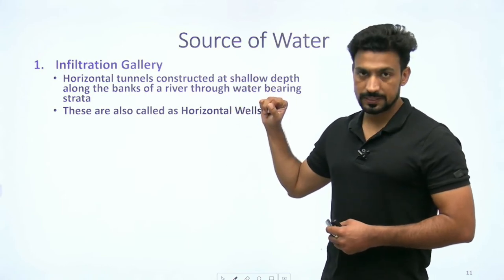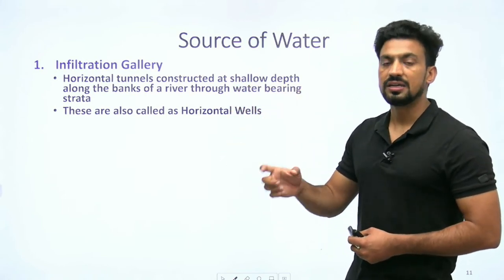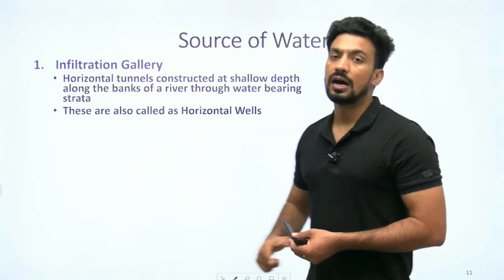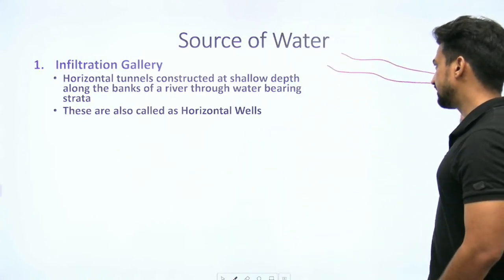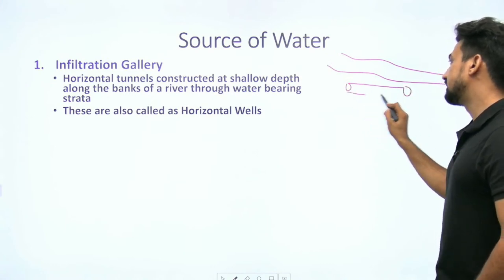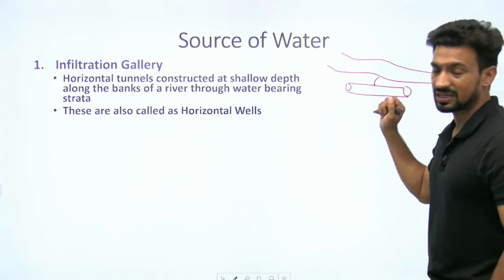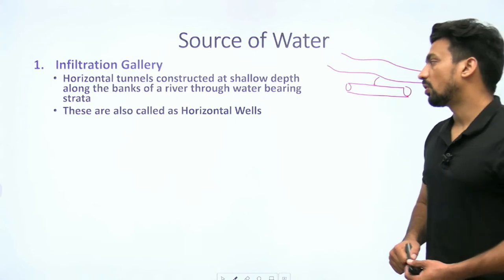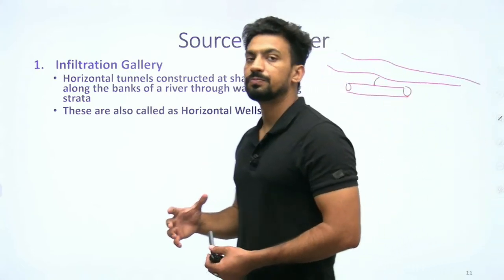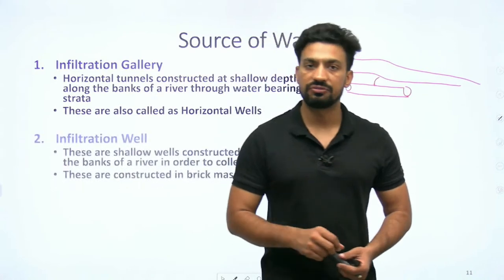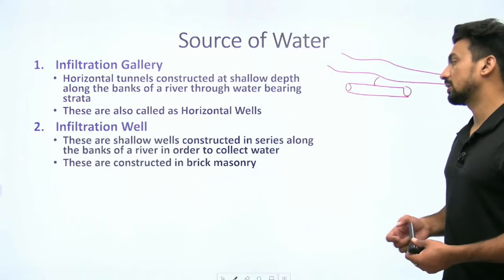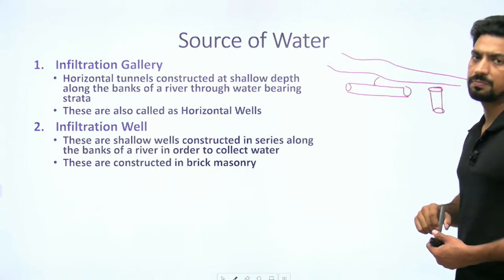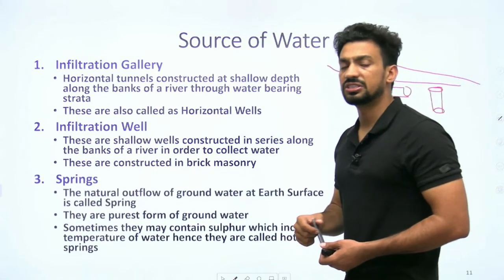Infiltration gallery क्या होती है? किसी river के side में parallel एक tunnel चलती है - एक horizontal well की तरह। River ऐसे flow कर रही है और इसके parallel एक tunnel बनाई जाती है। Seepage के through पानी इसके अंदर आता है और वहां से हम extract करते हैं। ये horizontal tunnels होती हैं जो shallow depth पर river के banks के साथ water-bearing strata में बनाई जाती हैं। Infiltration wells भी हो सकते हैं जहां vertical direction में excavation करके पानी extract किया जाता है।